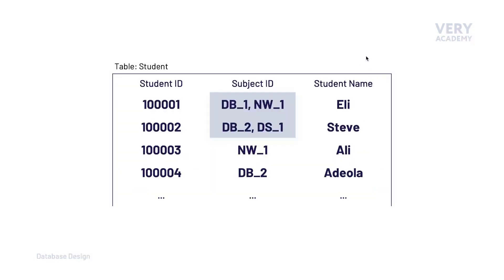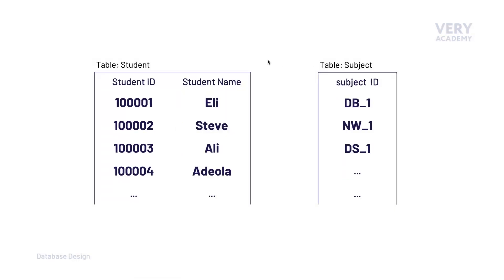So going back to our example here where the student is associated to multiple subjects, we're going to remove this subject field and the values and create a new table. So we've gone ahead and created a new table, a new entity, and that is the subject entity. So we want to model information about the subject, in this case, the subject ID.